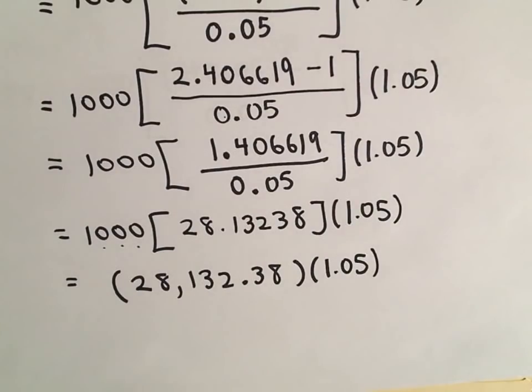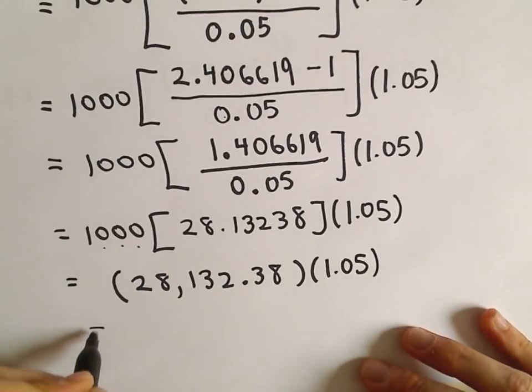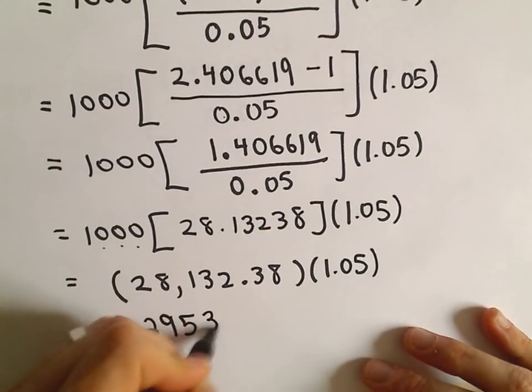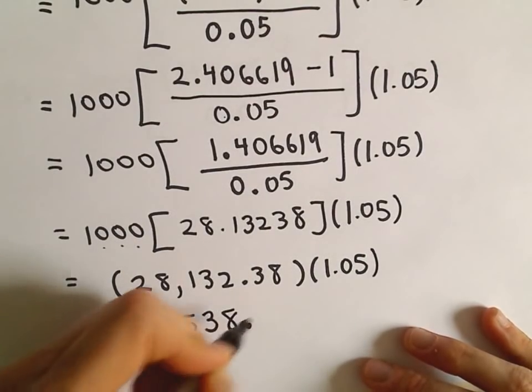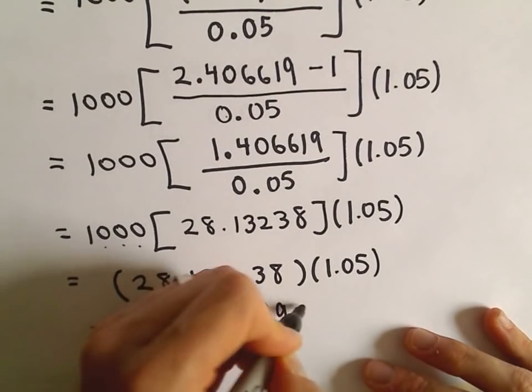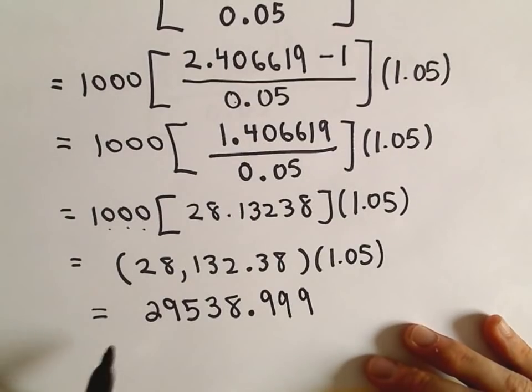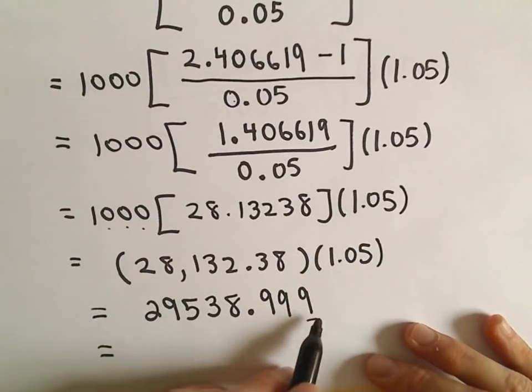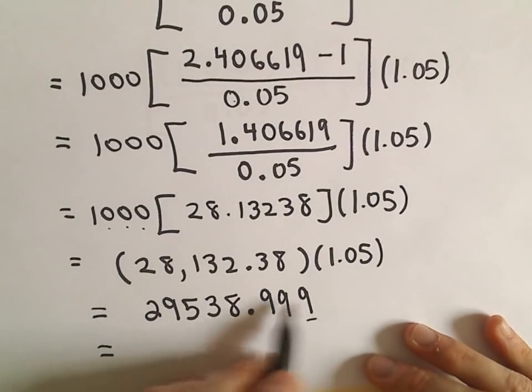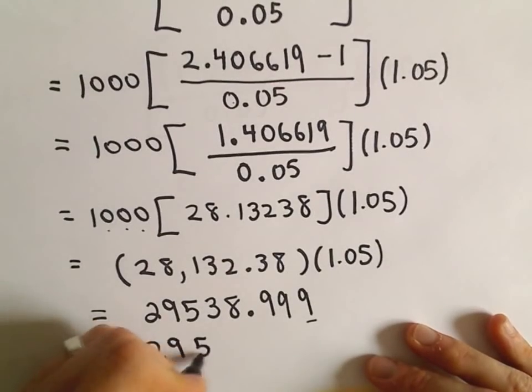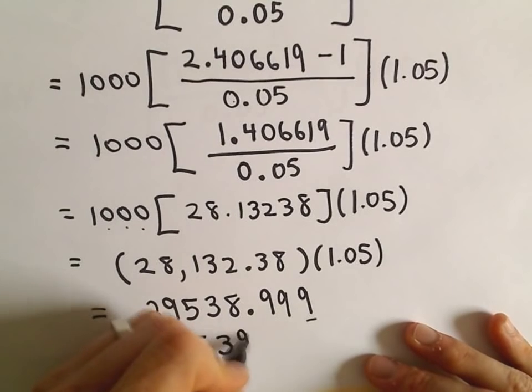And now I'm going to multiply that by 1.05. And this is a good reason why you should probably, if you're doing this for a living, you would definitely want to get savvy with a calculator or with a computer program because it will calculate things much more accurately than what I'm doing. I'm certainly being a little bit loose here. So I want to emphasize that. So I'm going to round up because I've got 0.999. So it looks like we've got $29,539.